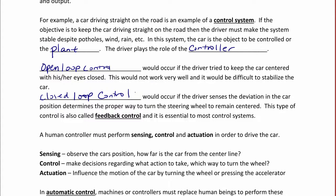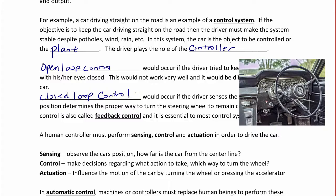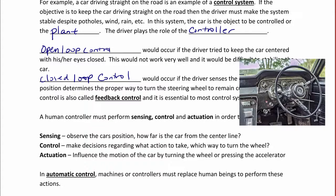A human controller must perform sensing, control, and actuation in order to be able to drive a car. Sensing would be observing the car's position — how far is the car from the center line, or how fast is the car going. Control would be to make decisions regarding what action to take, such as which way to turn the wheel. Actuation would be something that influences the motion of the car or the plant by turning the wheel or pressing the accelerator. In automatic control, machines or controllers must replace human beings to perform these actions.